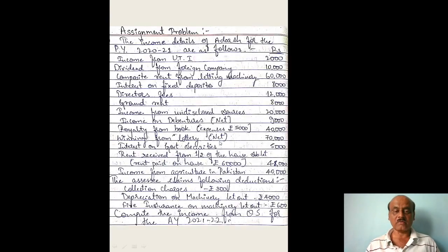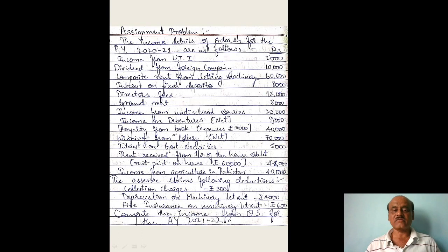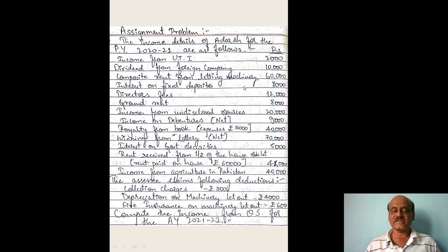Now, one assignment problem. The income details for the previous year 2021 are as follows: income from UTI Rs. 2,000, dividend from foreign company Rs. 10,000, composite rent from letting of machinery Rs. 60,000.